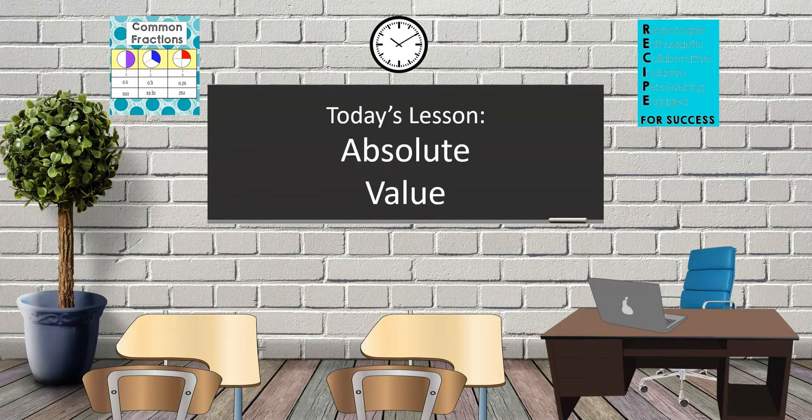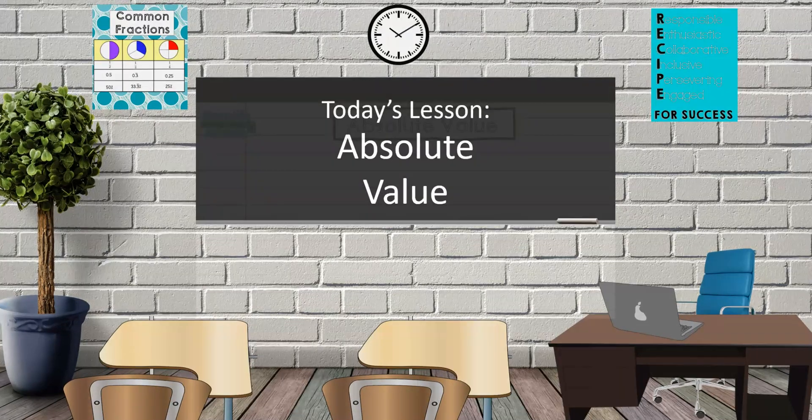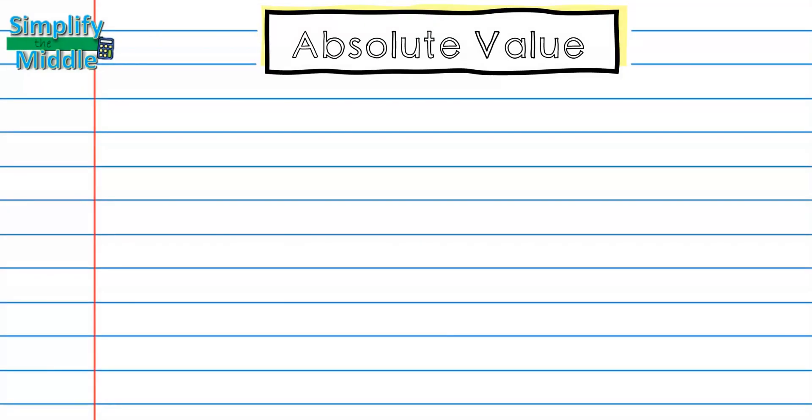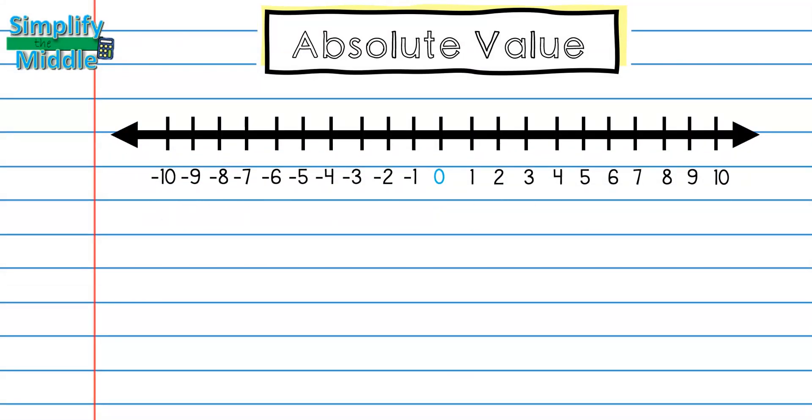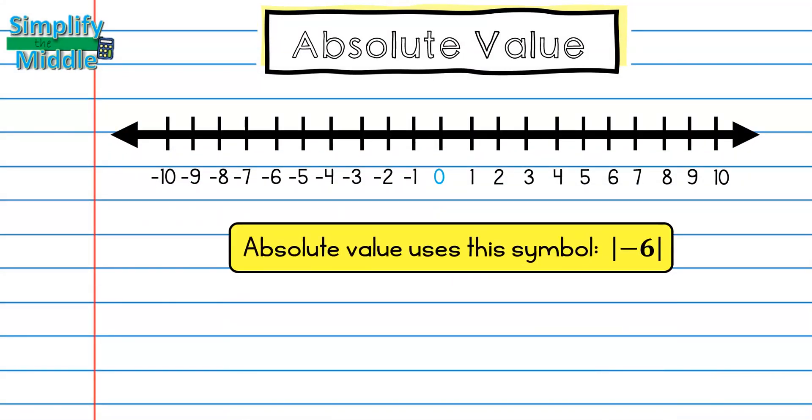Hi and welcome to today's lesson on absolute value. Absolute value is the distance of a number from zero. The absolute value symbol looks like two straight lines or bars on either side of a number.